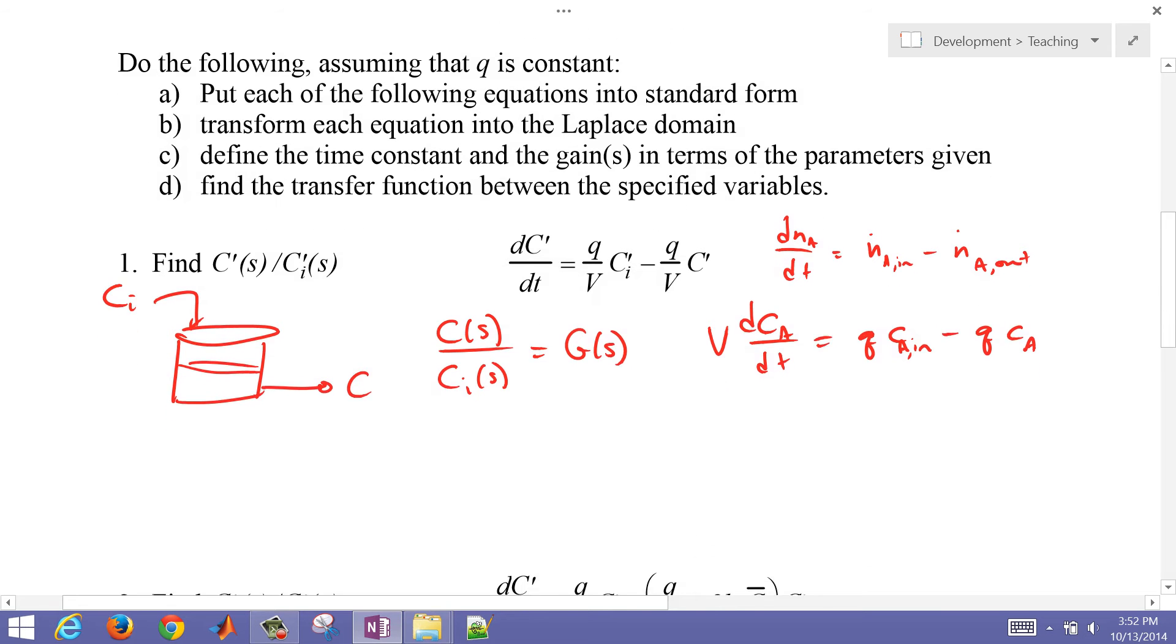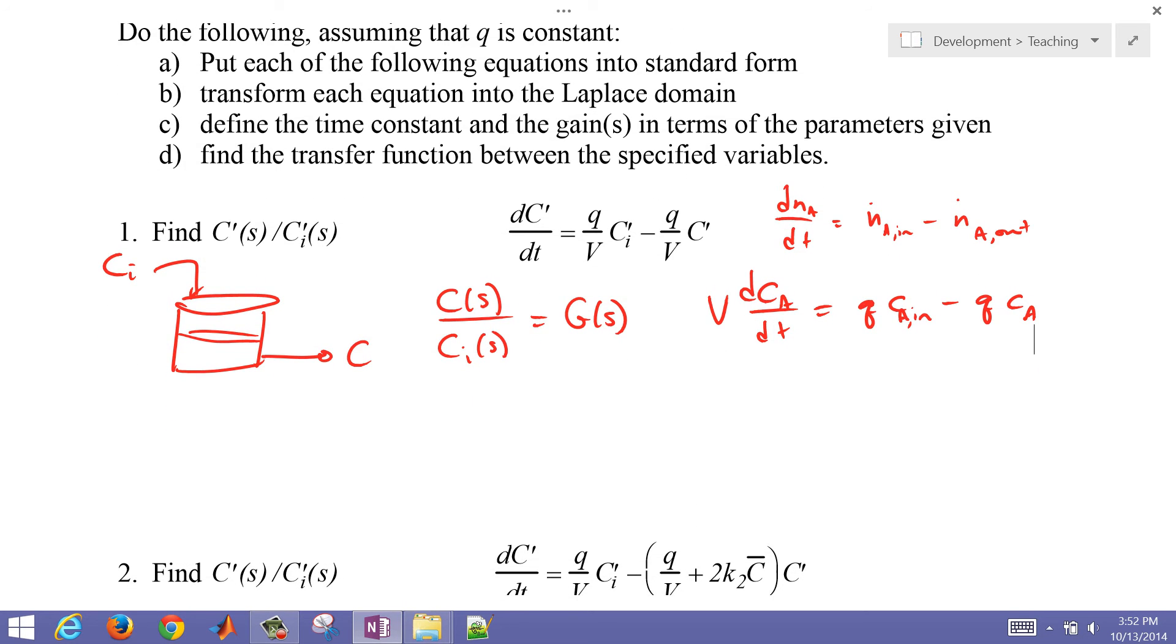If I linearize this and just put it into a deviation variable form, I come up with that transfer function. This is already a linear model, so really all I've done is just added the primes here, which indicate that I'm in deviation variable form. Or C prime equals C minus C bar, or these are the steady state nominal conditions.